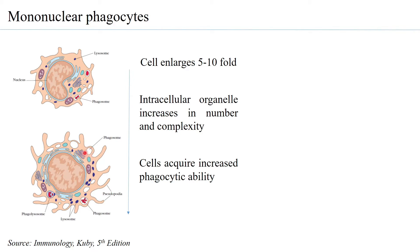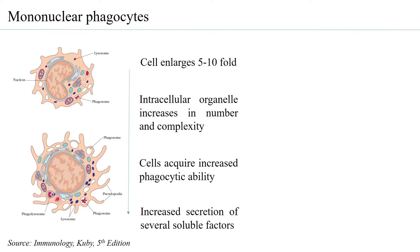These phagosomes then fuse with lysosomes to form what is called phagolysosomes. Within the phagolysosomes, the antigen is broken down into smaller fragments, and those fragments can then be presented on the surface through MHC class 2. In the process of forming a phagolysosome, the antigen is also killed.